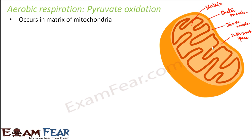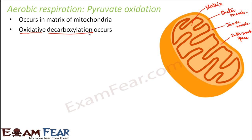So this process of pyruvate oxidation will take place inside the matrix. Here, oxidative decarboxylation will occur — oxidation takes place at the same time as decarboxylation. Decarboxylation means the removal of carbon dioxide. The enzyme involved in this step is pyruvate dehydrogenase.